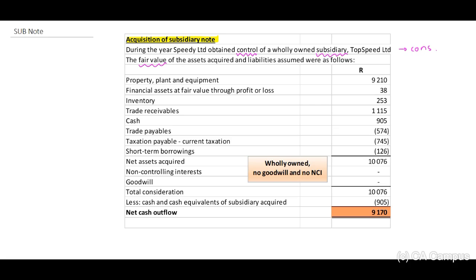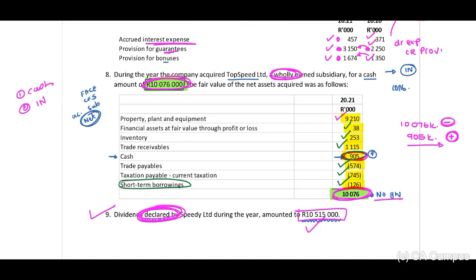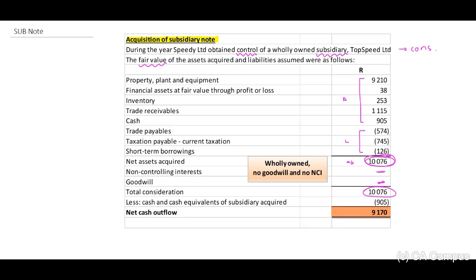Then: 'The fair value of the assets acquired and liabilities assumed were as follows.' Look at this — I have included all of the assets and all of the liabilities. There is no NCI and no goodwill. My total consideration is 10076, which agrees to the 10076 provided. I then indicate less cash and cash equivalents of 905, and this net figure of 9170 agrees to my cash flow statement.